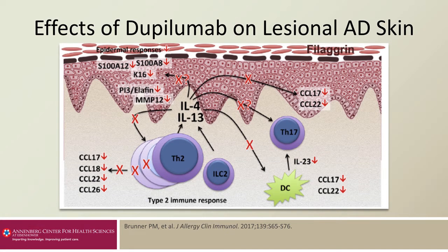In this next slide, we see the effects of dupilumab on lesional atopic dermatitis skin. Dupilumab blocks the effect of IL-4 and IL-13, and in doing so, a whole series of events cascade from this. The Xs indicate the steps that are blocked in the inflammatory cascade.